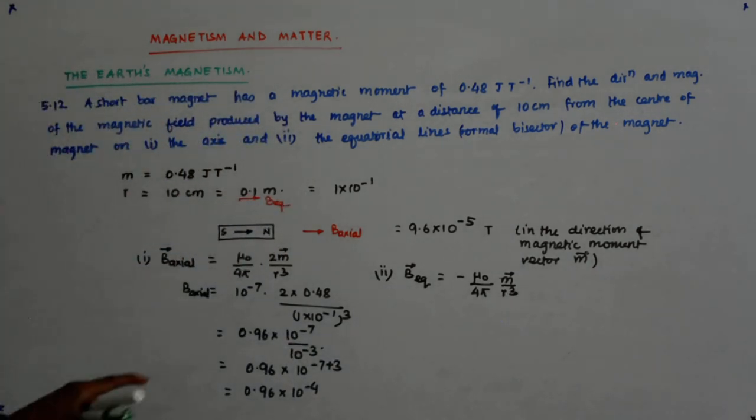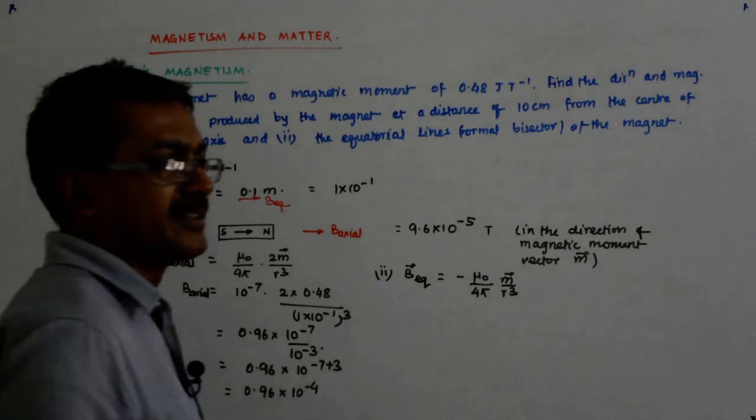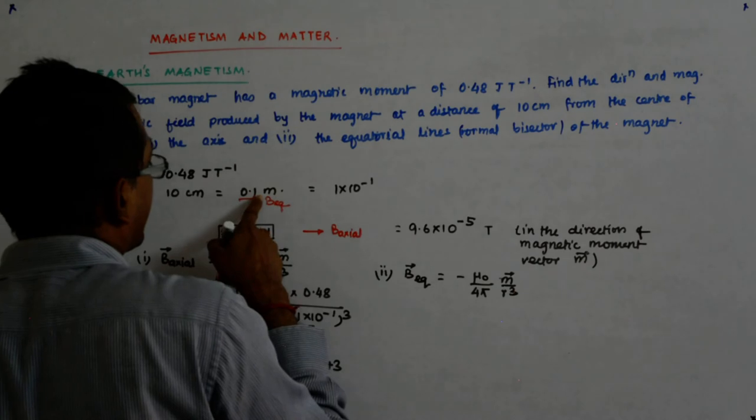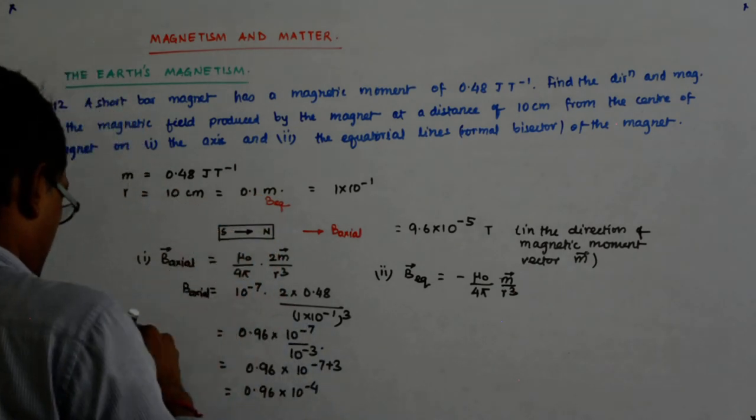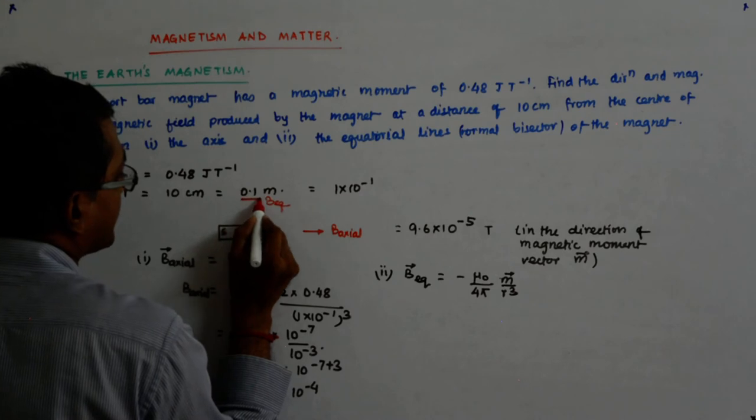So in effect you will see magnitude wise it is half of it. But direction wise it is the opposite, it is in the opposite direction. So the direction that I have shown earlier, that is not the direction, this is the direction.